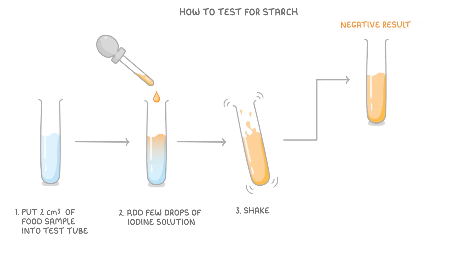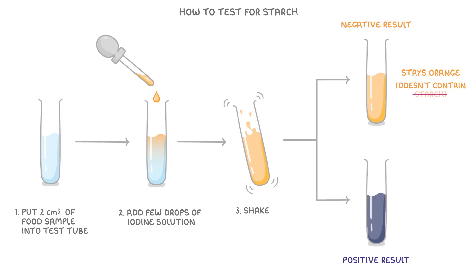A negative result is if the solution stays orange, which shows it doesn't contain any starch. A positive result is if the solution changes to blue-black, which means the food sample does contain starch.